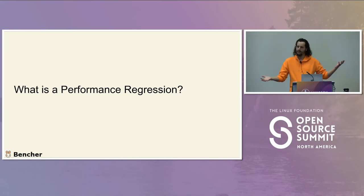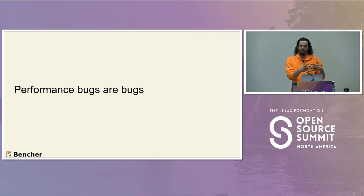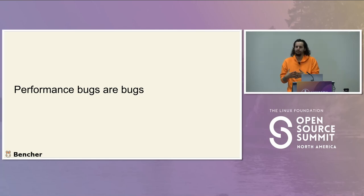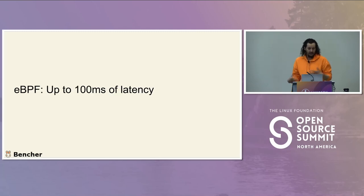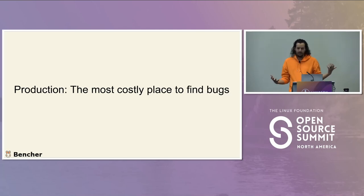And what is a performance regression? At a high level, performance bugs are bugs. Instead of a feature messing up, it is your performance getting messed up — something that should not take that long, taking way too long. With eBPF, you can actually add up to 100 milliseconds of latency for a single call if you really try. So you really want to make sure you keep that in check. Production is the most costly place to find bugs, so we're going to try and find them earlier.